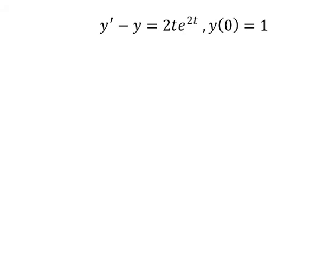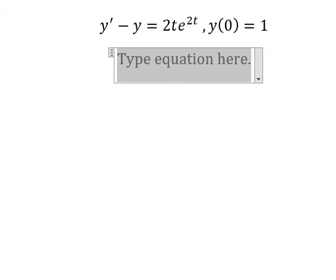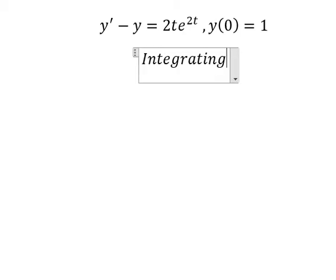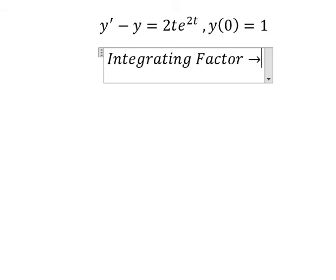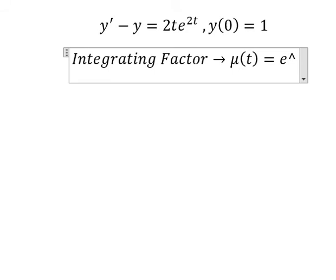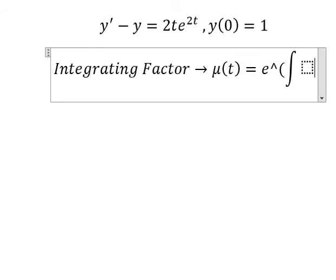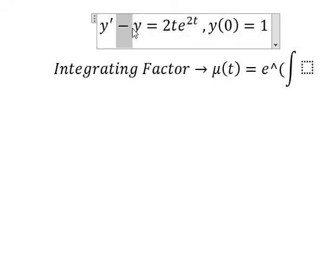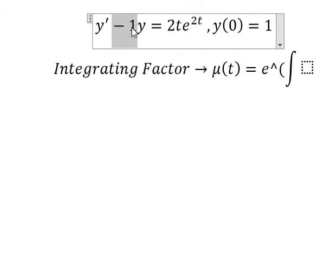We can use the integrating factor method, so we need to find μ(t), which equals e to the power of the integral of P. We see that the coefficient next to y is negative one, so we use negative one for the integrating factor.